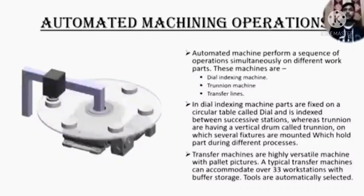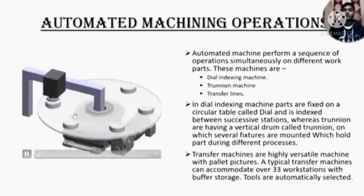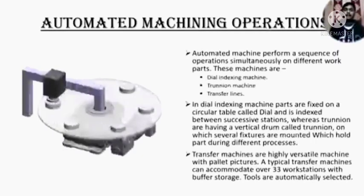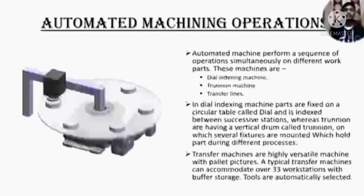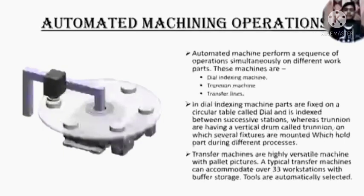Automated machining operations. Automated machines perform a sequence of operations on different work parts. These machines are dial indexing machines, trunnion machines, and transfer lines. In a dial indexing machine, parts are fixed on a circular table called a dial and indexed between successive stations. Whereas trunnion machines have a vertical drum called trunnion on which several fixtures are mounted which hold parts during different processes. Transfer machines are highly versatile machines with pallet fixtures. A typical transfer machine can accommodate over 33 workstations with buffer storage. Tools are automatically selected.